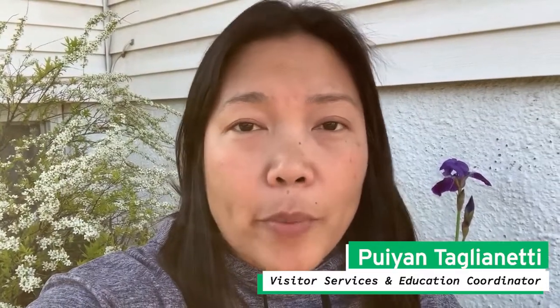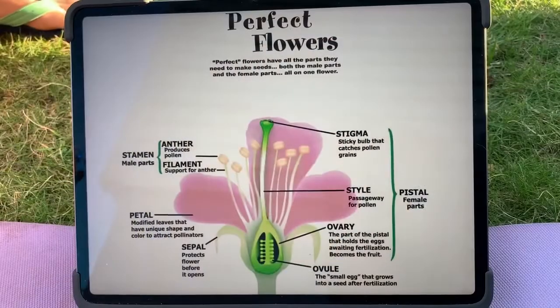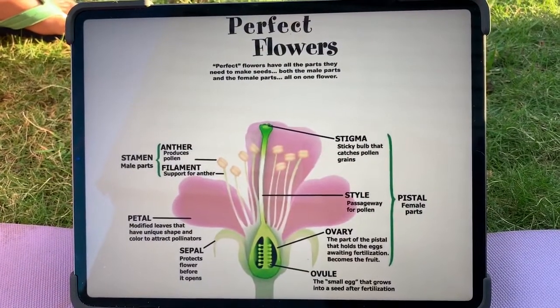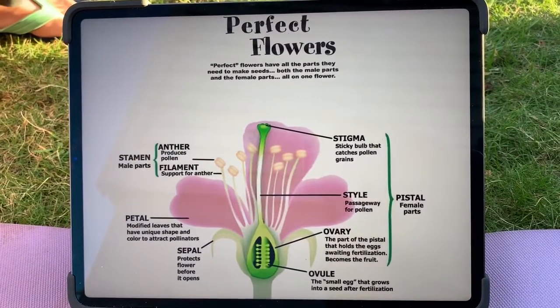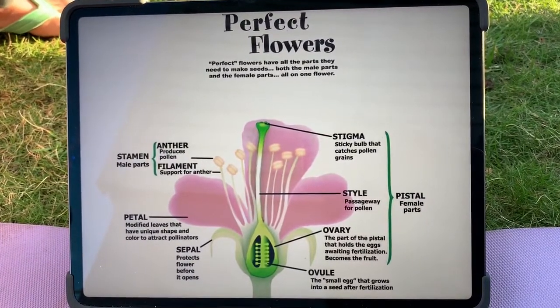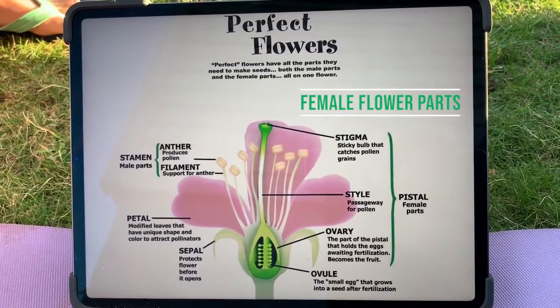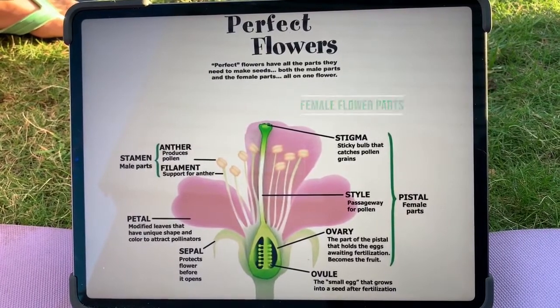Perfect flowers have all the parts they need to create seeds. That means it has both the female and the male parts. Here we have a picture of a perfect flower. You can see it has the female parts which are called the pistil, and it consists of the stigma, style, ovary, and the ovule.